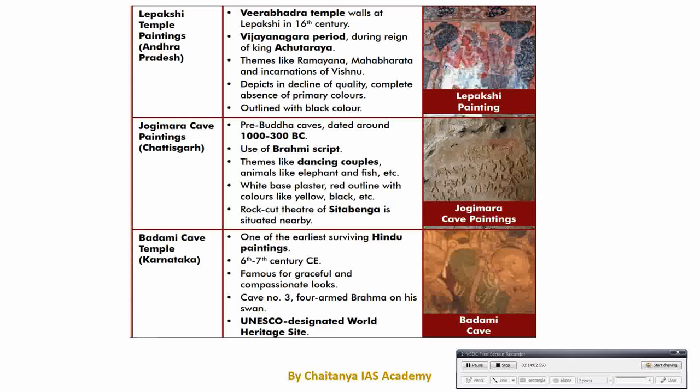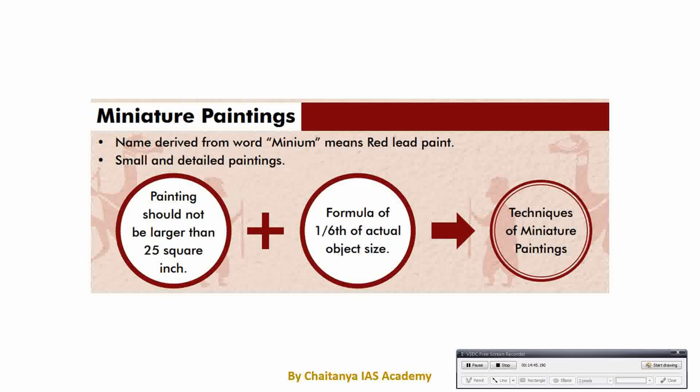The major themes of Jogimara Cave painting are dancing couple, animals, elephant, and fish. White color along with red, black, and yellow has been used. The next important site is Badami Cave Temple, found in Karnataka, one of the earliest Hindu survival cave temples. The painting was drawn around 6th to 7th century and the famous painting is Forearm Brahma, found in cave number 3. Badami Cave Temple painting is also a UNESCO heritage site. These are the major important mural painting sites found in India.